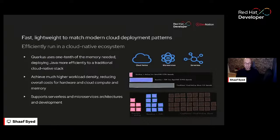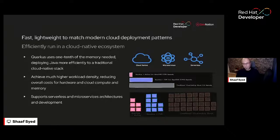Quarkus fits well in that microservice and serverless space. Quarkus minimizes startup time, reduces memory usage, and can run applications in native mode. This makes it an extremely interesting choice when talking about resource consumption, workload density, and serverless applications. That's why Keycloak chose to base its stack on Quarkus. Traditional native stacks take much more time and memory, whereas Quarkus takes far less, especially in native mode.